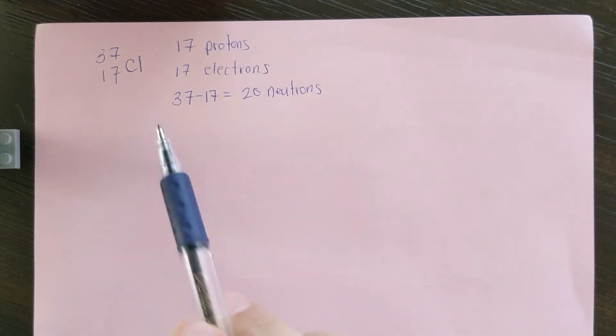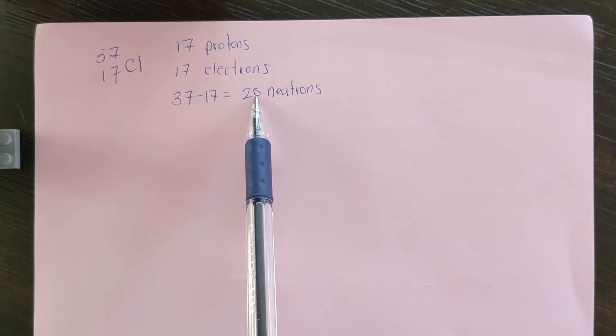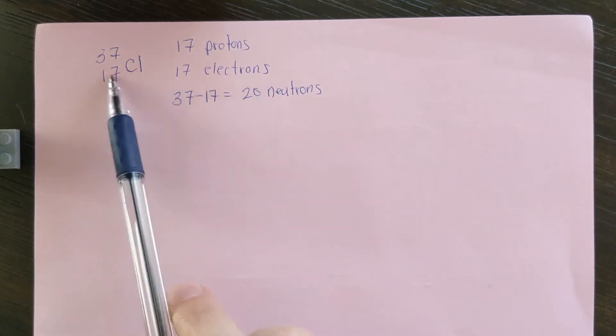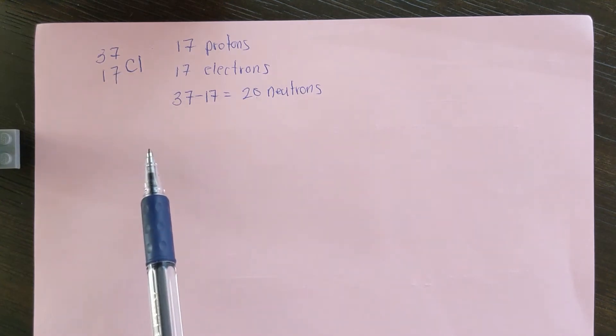So when we calculate the nuclear binding energy, we're going to take the mass of all of these particles individually and subtract the mass of this atom from that. So the difference in mass is what's converted to energy to bind the nucleus together.